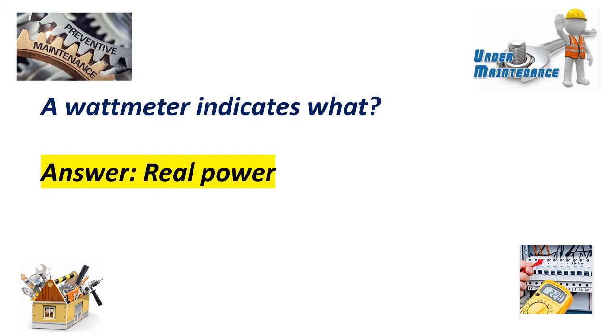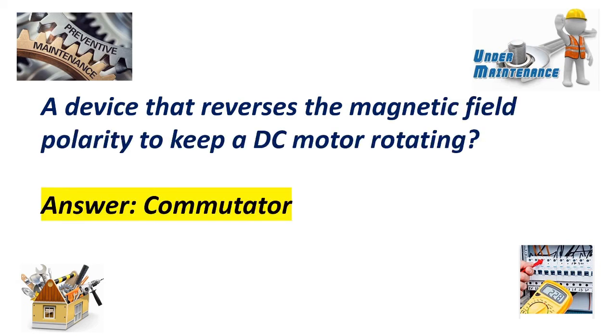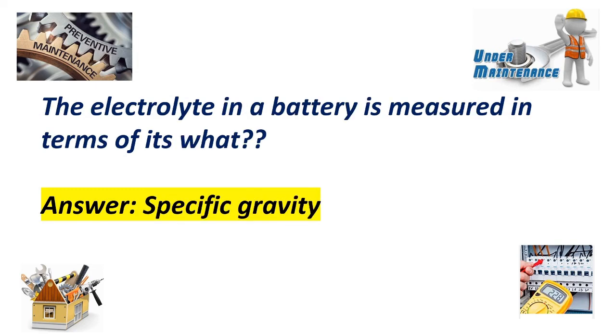A wattmeter indicates watt, real power. A device that reverses the magnetic field polarity to keep a DC motor rotating? Commutator. The electrolyte in a battery is measured in terms of? Answer: Specific gravity.